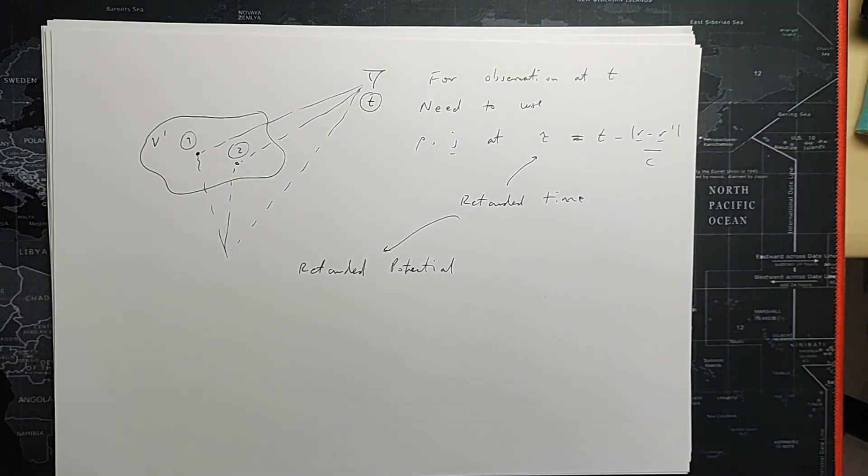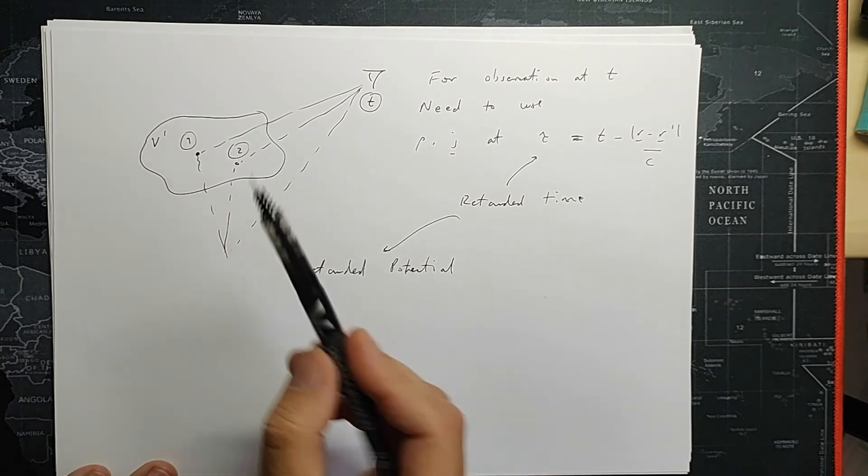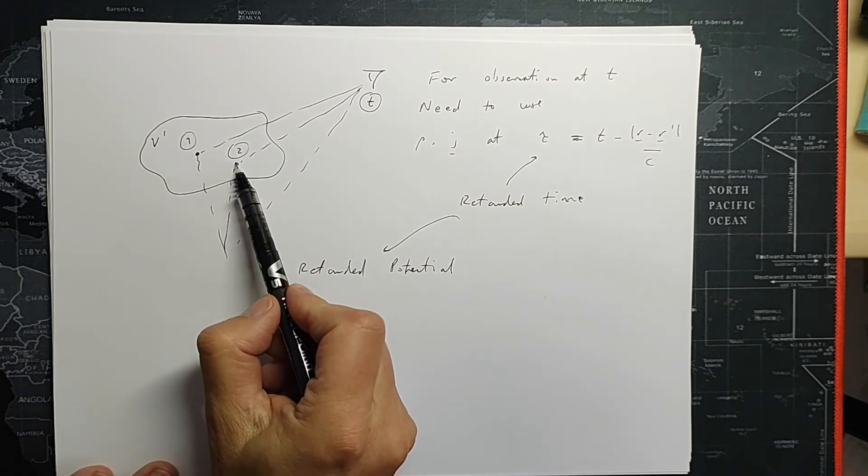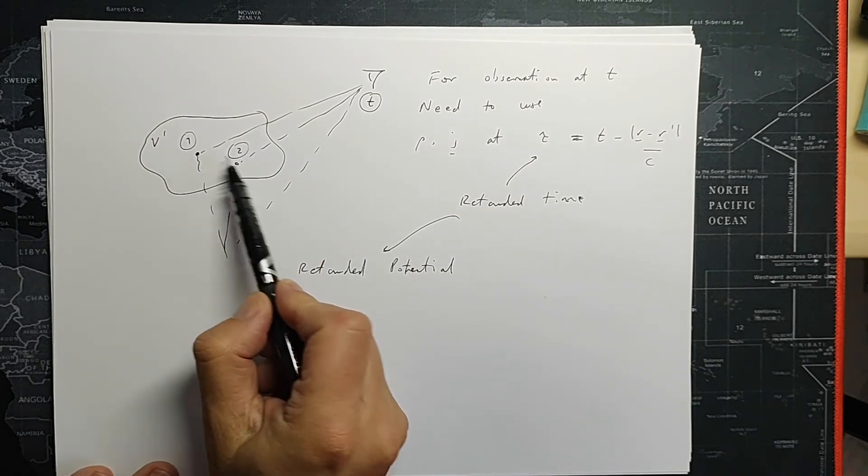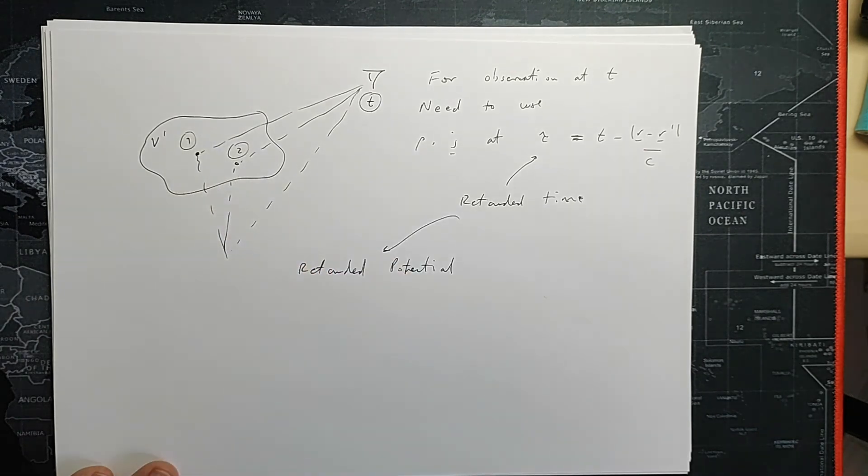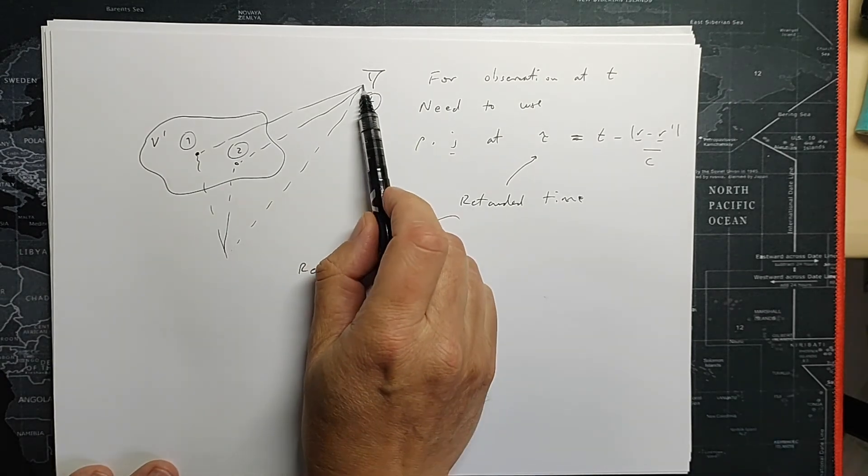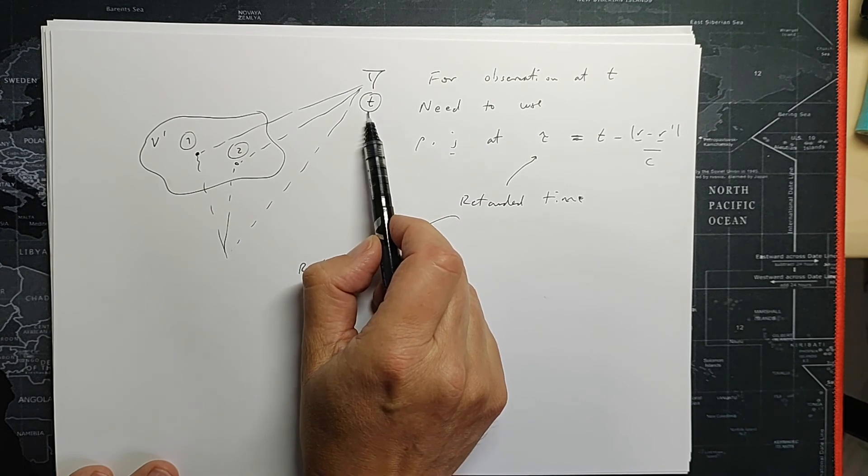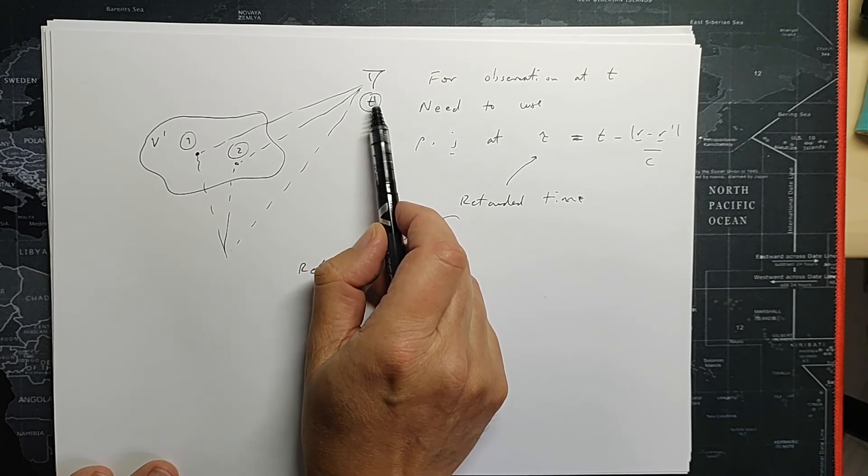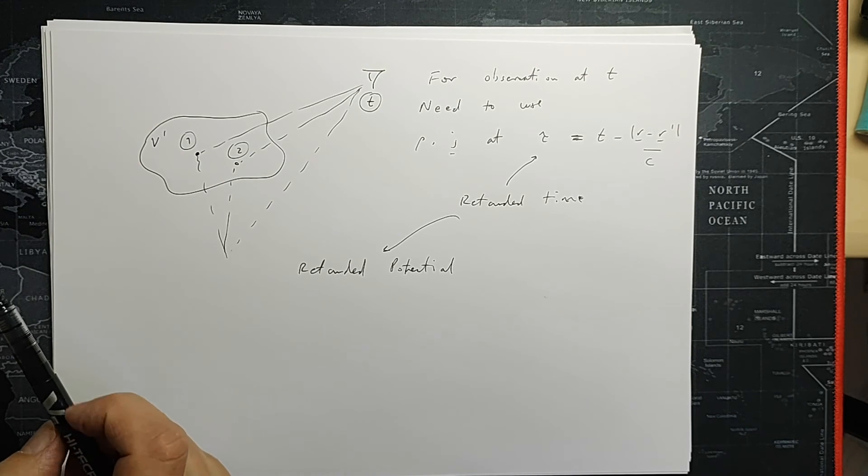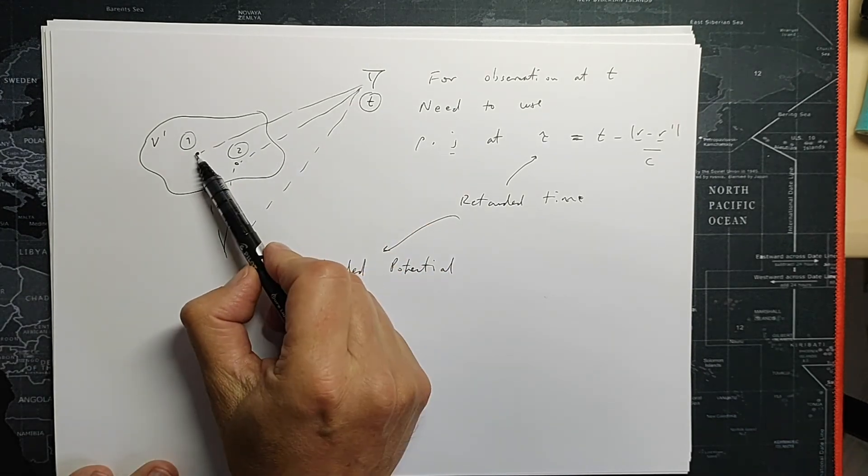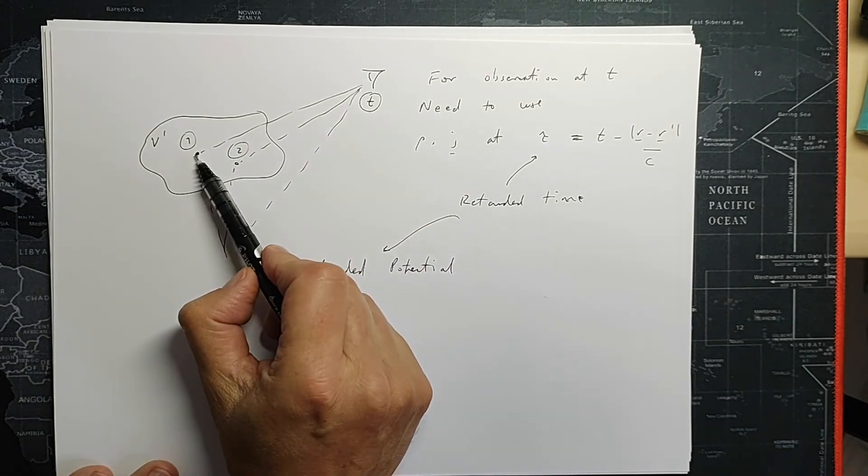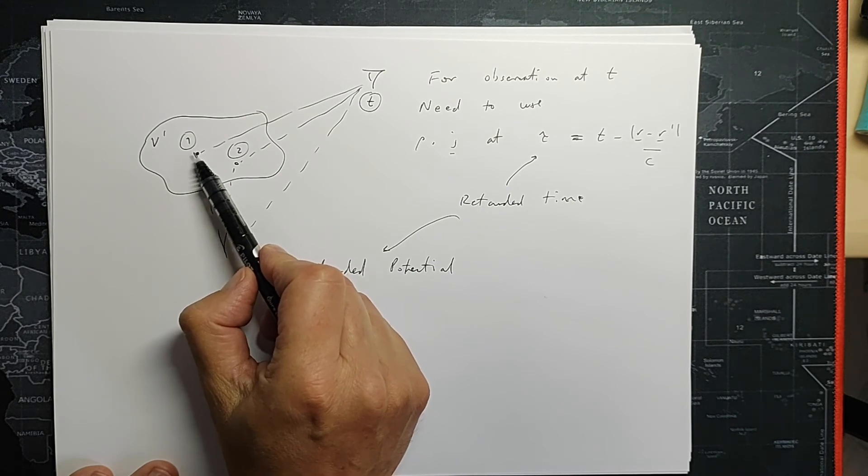So here is our dynamic case. And the important difference is that the distances between each of these individual pieces of charge in this volume is different as observed by a particular observer over here. So we are imagining what does this observer see? This observer we imagine is observing at some particular time t. Well, clearly the piece of charge or the potential due to a piece of charge is what's happening in this location at some earlier time, at some retarded time.